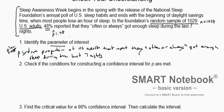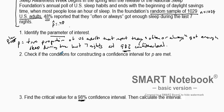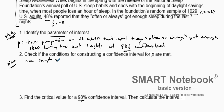That is our plan. We're going to state P as the true proportion of US adults that report they often or always got enough sleep during the last seven days, at a 98 percent confidence level. So this is the State part, and this is our Plan: we plan a one-sample Z interval for P.